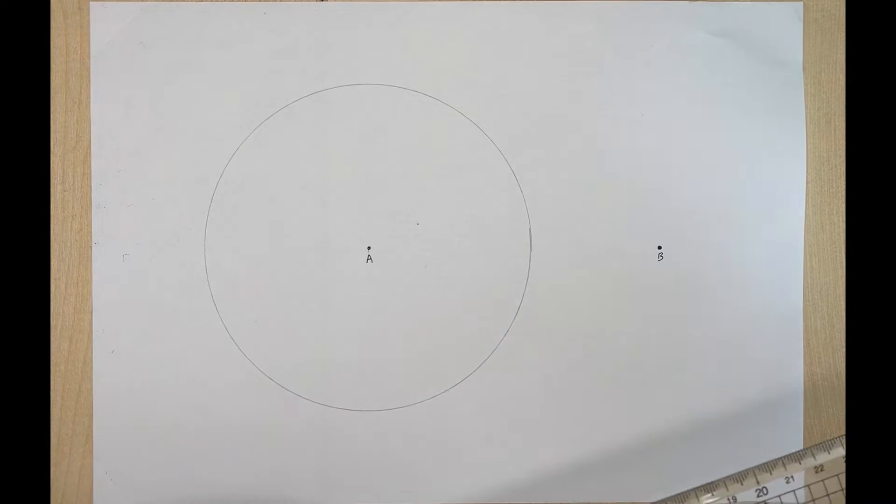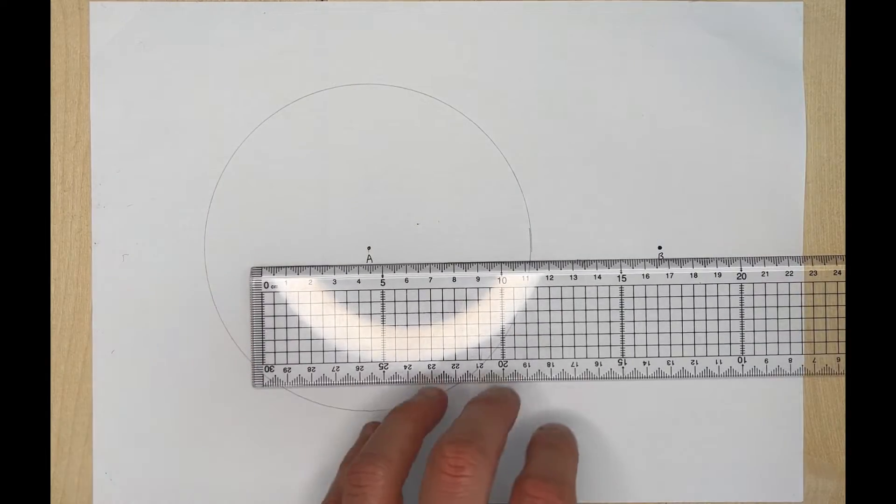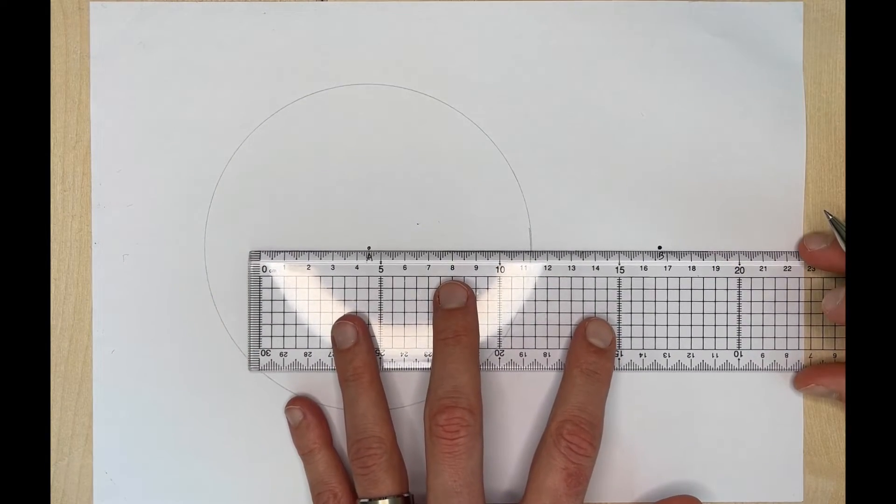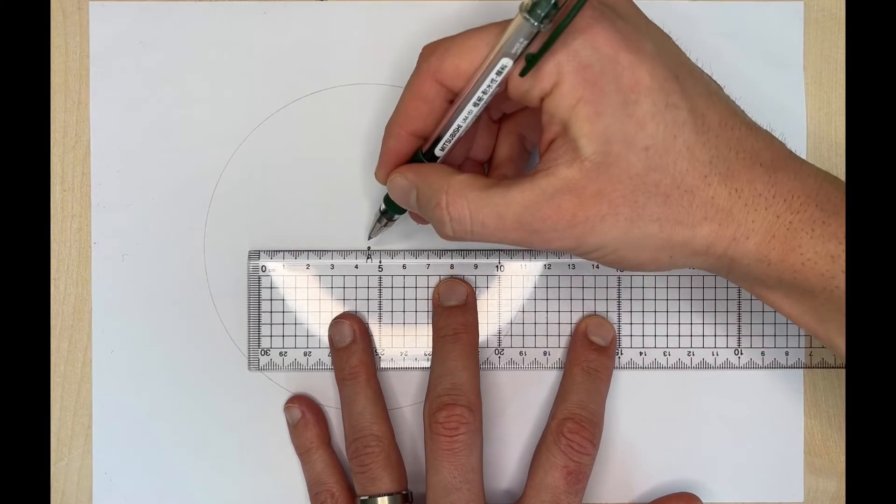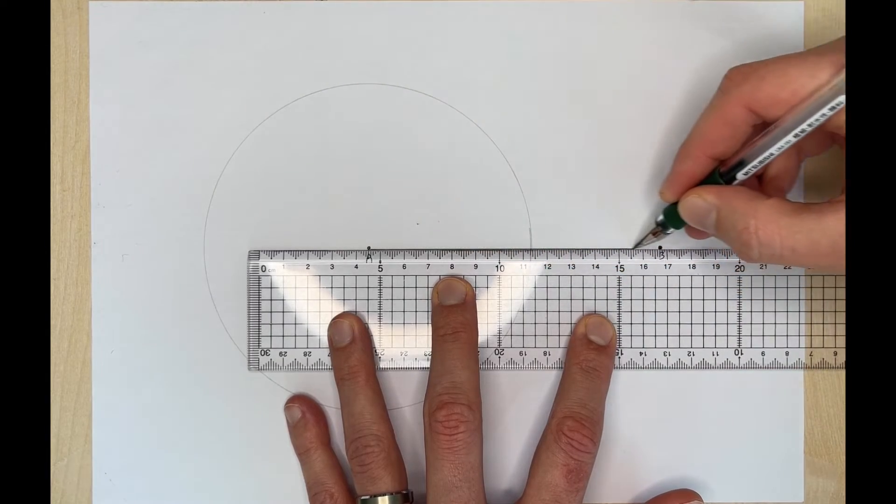The first thing we're going to do is just take a straight edge and we are going to connect points A and B. So we're going to draw our line here and we got that.